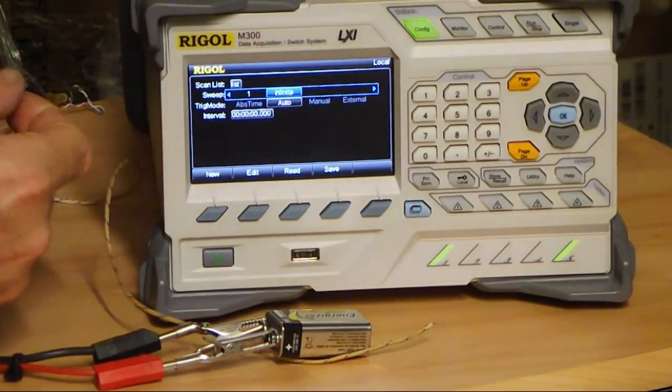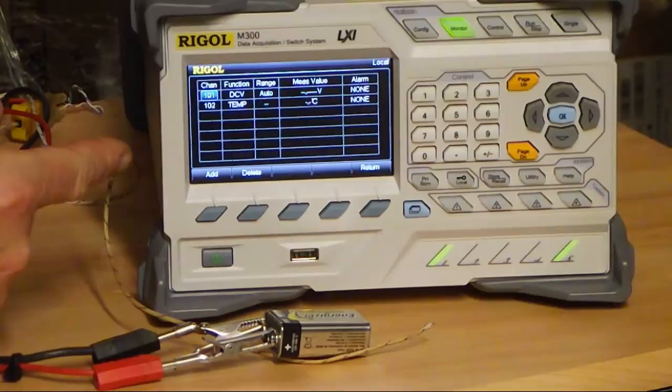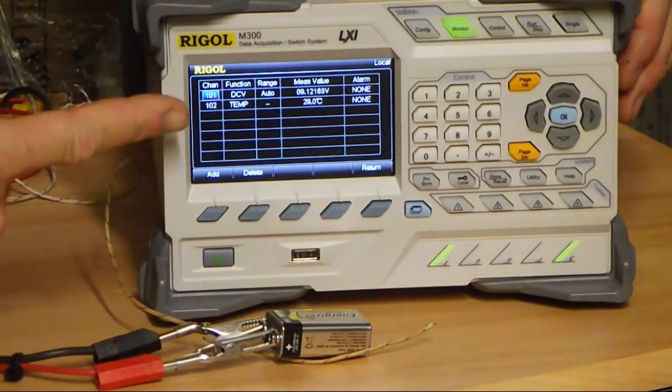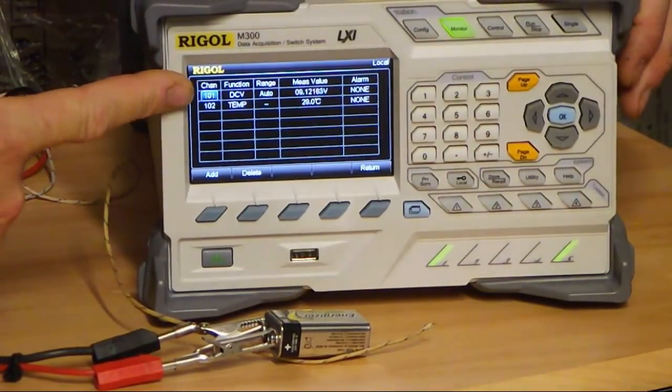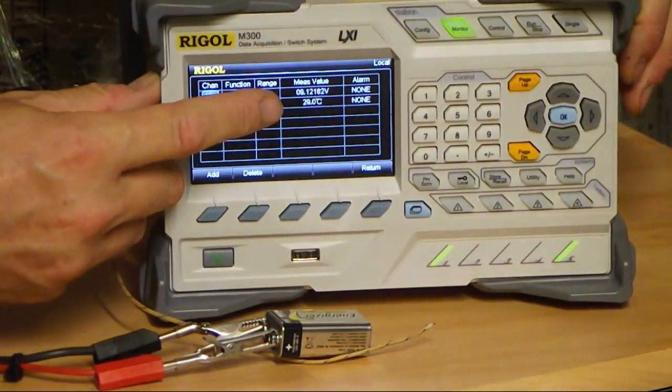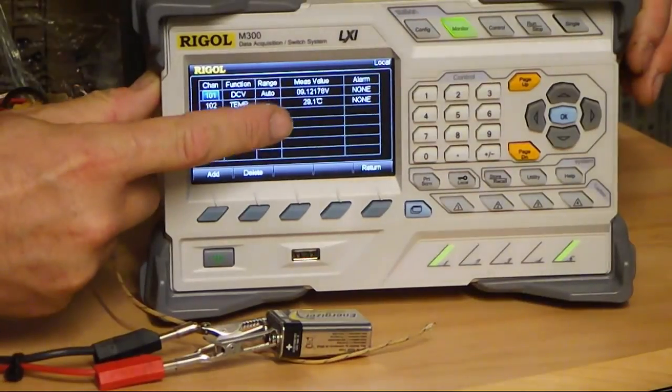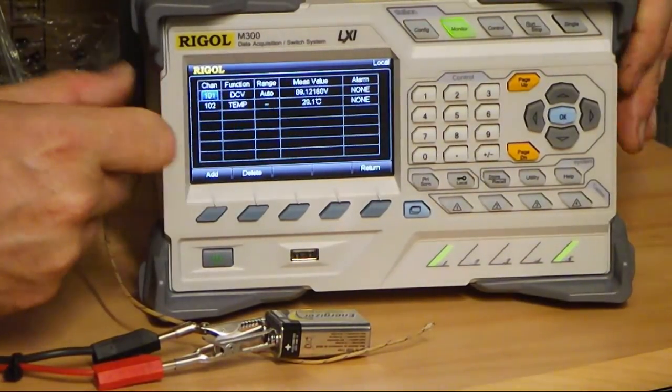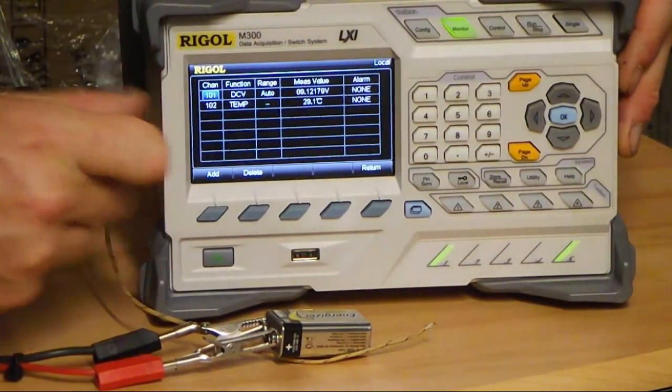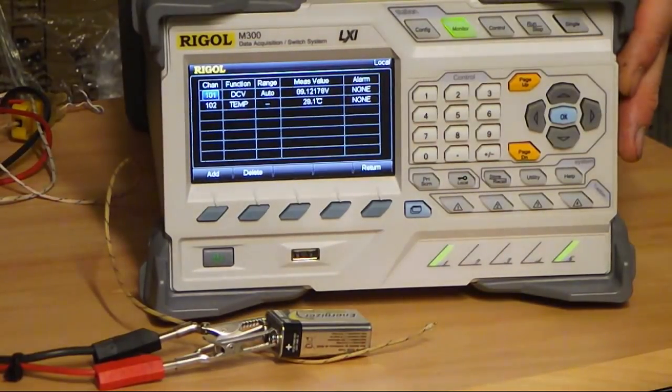And I'm going to show you both monitoring. So now the unit is monitoring DC volts on channel one and it's showing that nine-volt battery, and it's also showing the thermocouple and it's correctly showing the rather warm 29 degrees temperature that is up here.